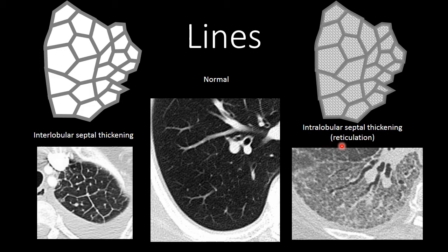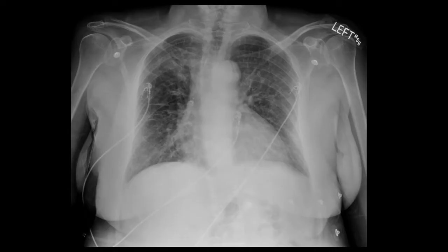There is also intralobular septal thickening, sometimes referred to as reticulation. The intralobular septa are fine connective tissue surrounding the acini and alveoli that also contain the capillary beds of the lungs. If the intralobular septa become thickened, you get a very fine ground glass appearance to the lungs because these septa are so small and they surround individual acini. This is most commonly seen in fibrotic lung diseases and can mimic the ground glass opacity seen in more acute processes.